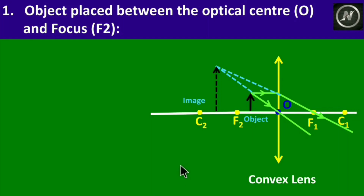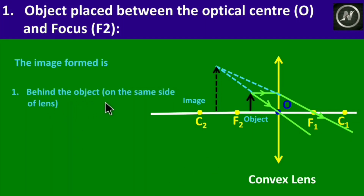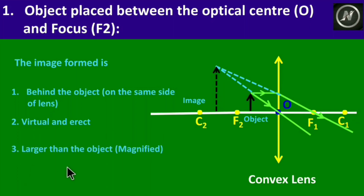The image forms in front of the convex lens, behind the object, on the same side as the object. The image is virtual and erect, and larger than the object — a magnified image. So when the object is placed between the optical center and the focus, the image formed is virtual, erect, and magnified.